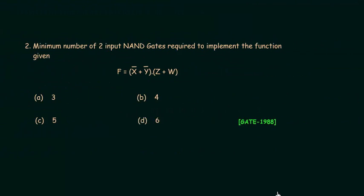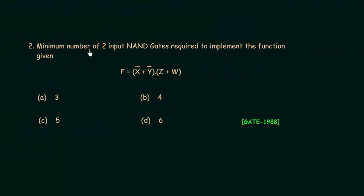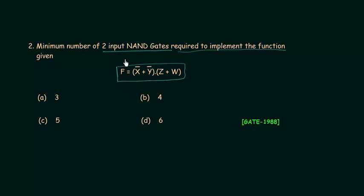Now we move to problem number two. In the second problem we have to find the minimum number of two-input NAND gates required to implement a given function. I will not fully solve this problem but will give you a hint on how to solve it. The first step is to open the brackets in the expression.